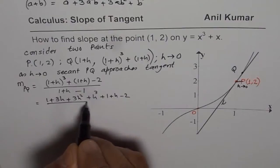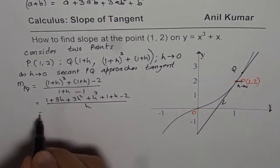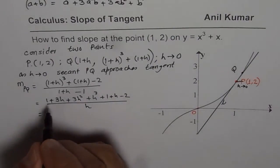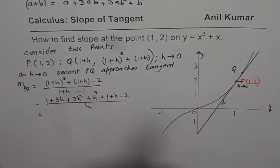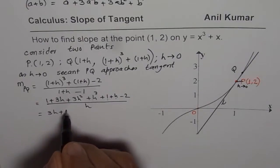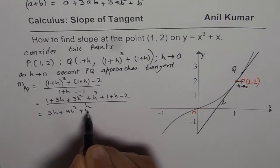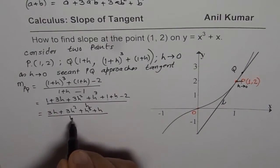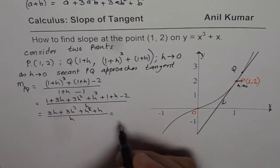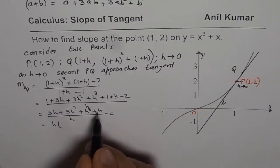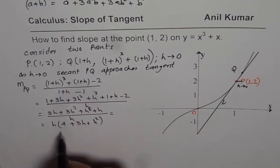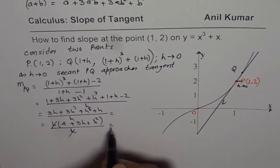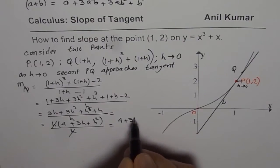Subtracting 2 and dividing by h: we see 1 plus 1 is 2, and 2 minus 2 is 0, so those cancel. We are left with 3h plus 3h squared plus h cubed plus h, all divided by h. Taking h common from the numerator gives h times (4 plus 3h plus h squared) divided by h. The h cancels, leaving 4 plus 3h plus h squared.